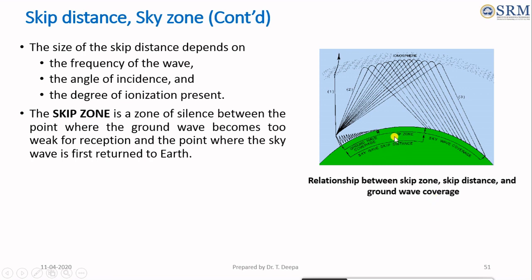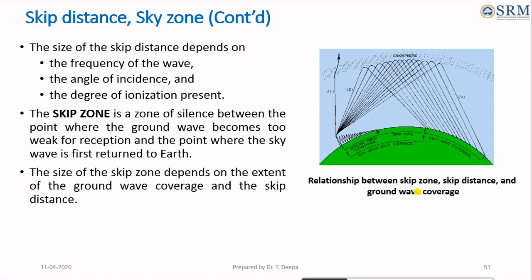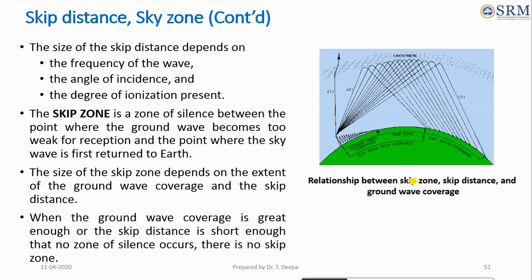Another factor is skip zone. The skip zone is a zone of silence between the point where the ground wave becomes too weak for reception and the point where the sky wave is returned to the earth. The size of the skip zone depends on the extent of the ground wave coverage and the skip distance. When the ground wave coverage is great enough or the skip distance is short enough, there is no zone of silence and there is no skip zone.